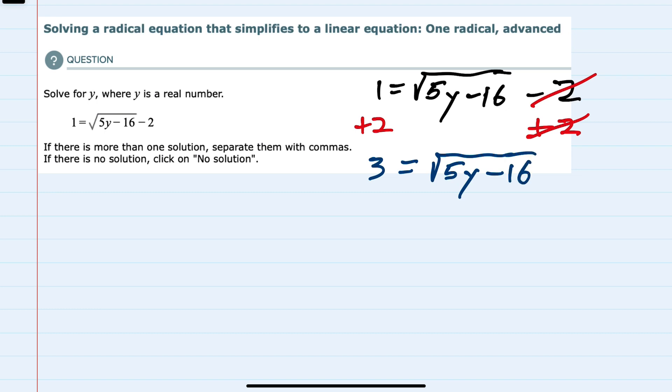And then I can eliminate the radical. Since it's a square root, I can square both sides of this equation. Canceling the square and the square root on the right gives me 5y minus 16, and on the left, the 3 squared is 9.